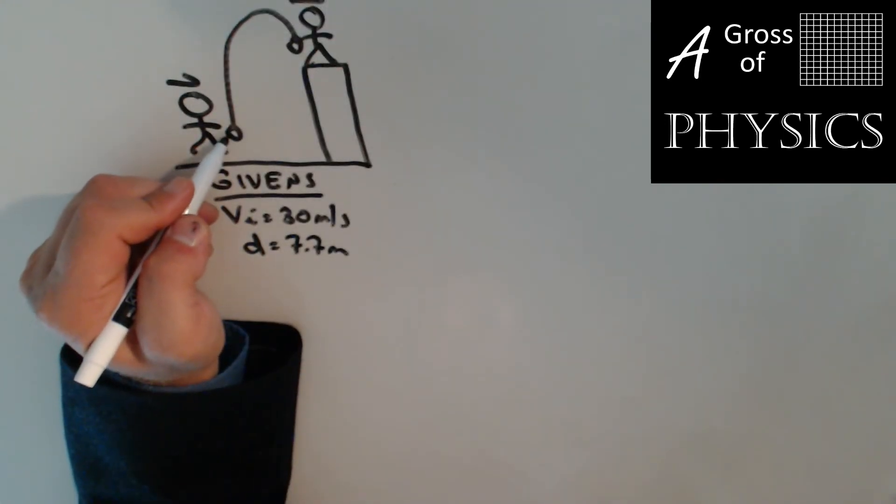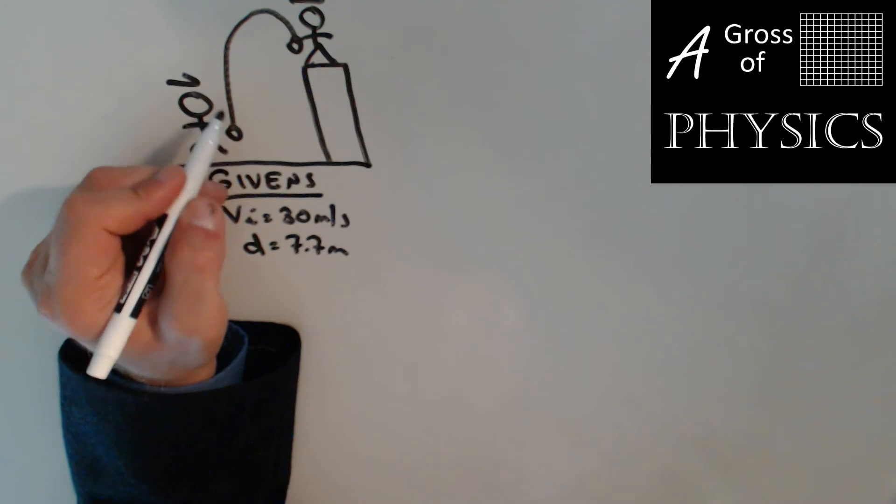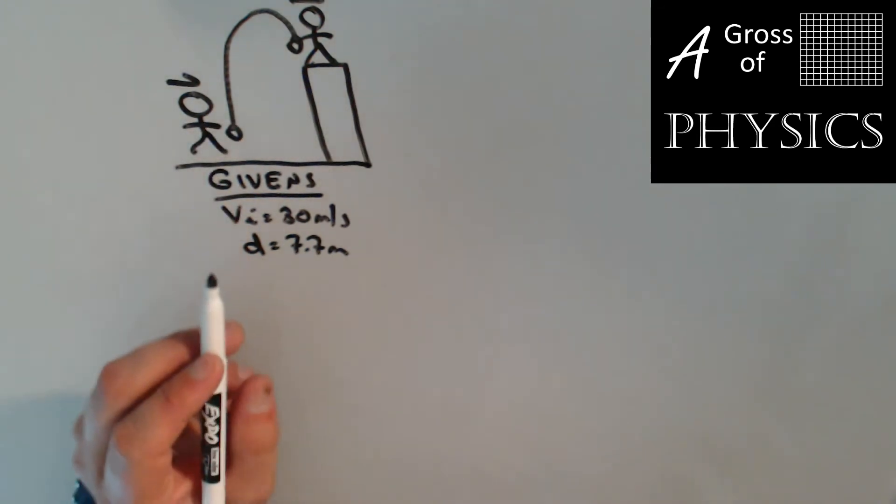So displacement is 7.7 meters. Now, even though the player tossed the ball, we cannot know how tall the player is from this problem, so we have to assume it's 7.7 meters from where the ball is released.